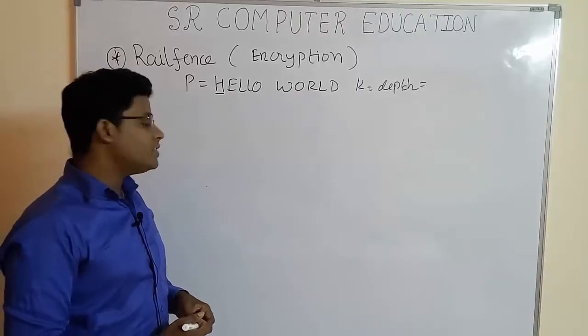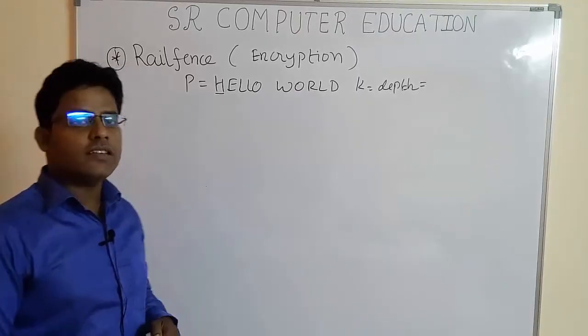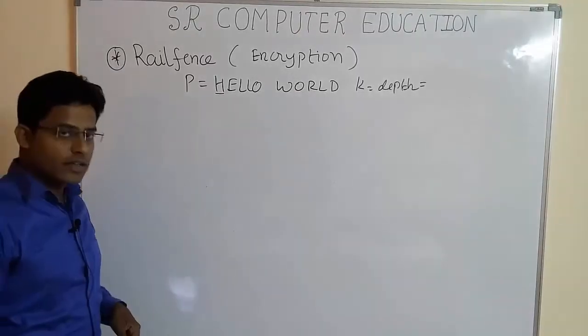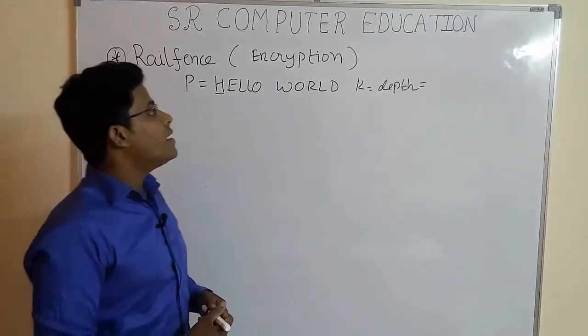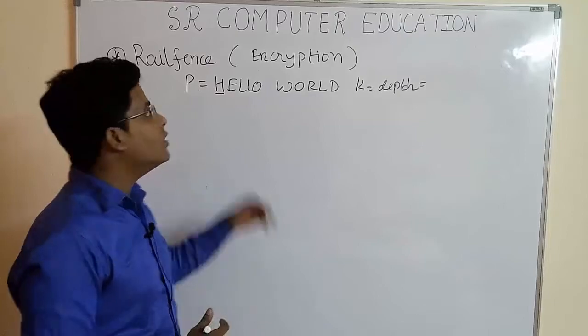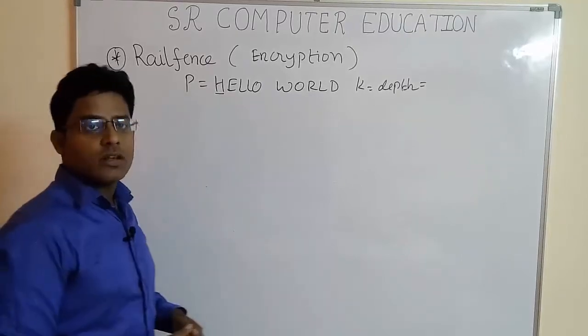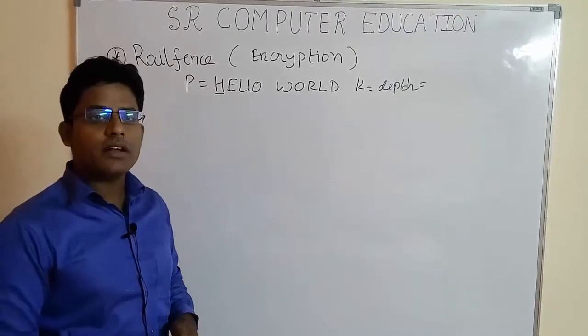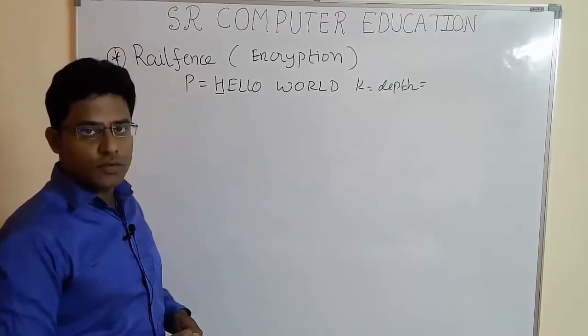Now when the depth is 2 it is easy to do encryption as well as decryption, but when the depth increases the encryption as well as decryption process of rail fence technique becomes quite confusing. Encryption is very easy but decryption is confusing.